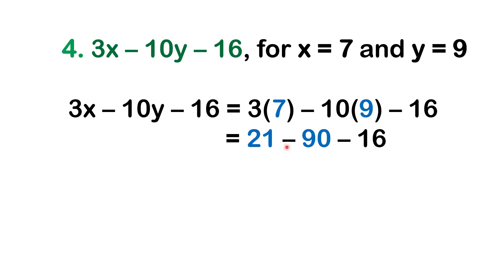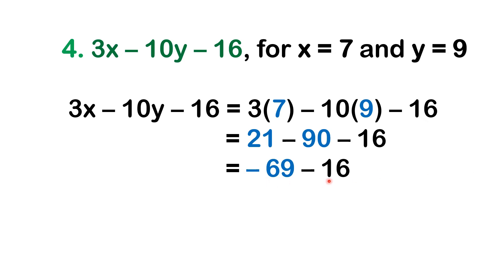Let us start with 21 minus 90. Subtract and copy the sign of the larger number. Since the larger number is 90 and it is negative, the answer will also be negative. 90 minus 21 gives us 69, so we have negative 69. Then bring down negative 16. Negative 69 minus 16 — both are negative, so add the numbers and copy their sign. 69 plus 16 gives us 85, and copying the negative sign gives us negative 85.